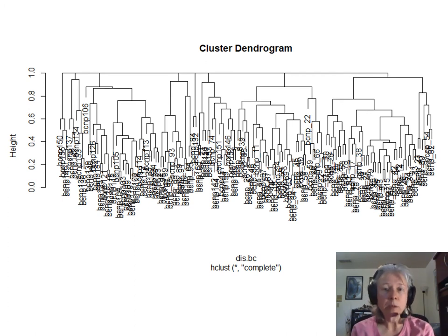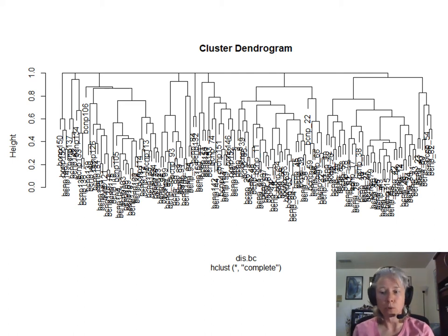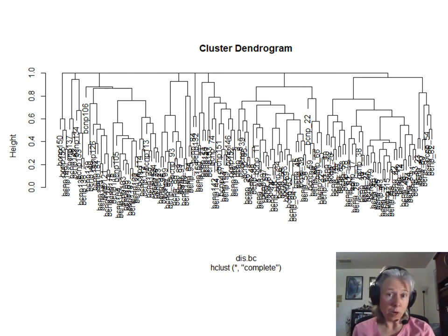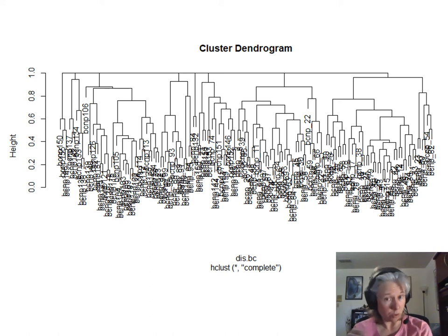Now that we have groupings, we can perform DFA to examine how those groups of sites differ with respect to environmental variables. We used a decision tree or tree classifier approach. Tree classifiers act like dichotomous keys familiar from taxonomy. We used the Bryce site dataset to determine how well the clusters reflected environmental differences, examining elevation, slope, aspect value, soil depth, and topographic position — a mixture of both numeric and categorical variables.